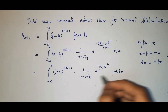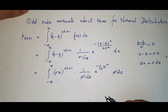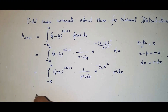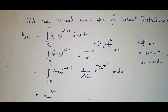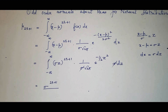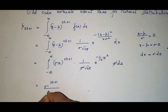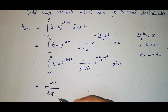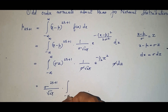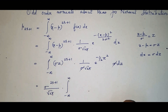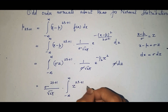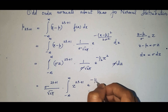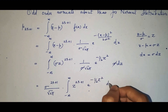From here, one factor of σ from f(x) cancels with the σ from dx, leaving σ^(2r+1) / √(2π) multiplied by the integral from minus infinity to infinity of z^(2r+1) · e^(−z²/2) dz.